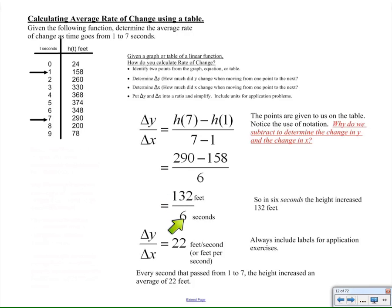That's 132 feet every six seconds. If you take this ratio and divide it out, it becomes the number 22. But the labels stay. 132 feet over six seconds simplifies to 22 feet per second. So 132 feet every six seconds averages up to 22 feet for every one second.